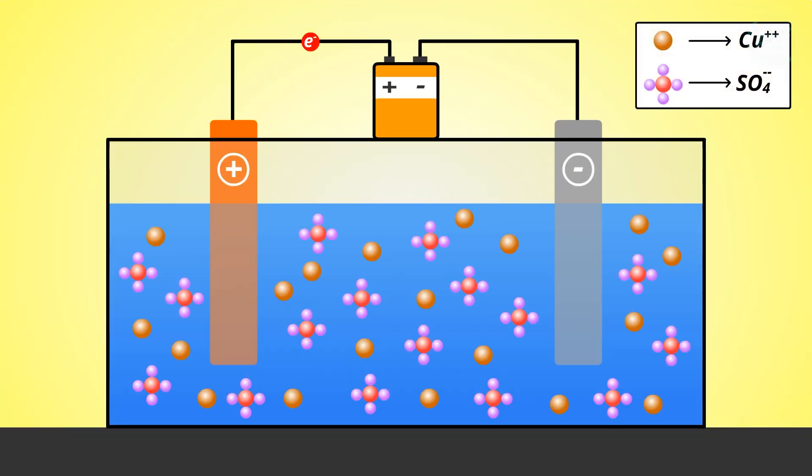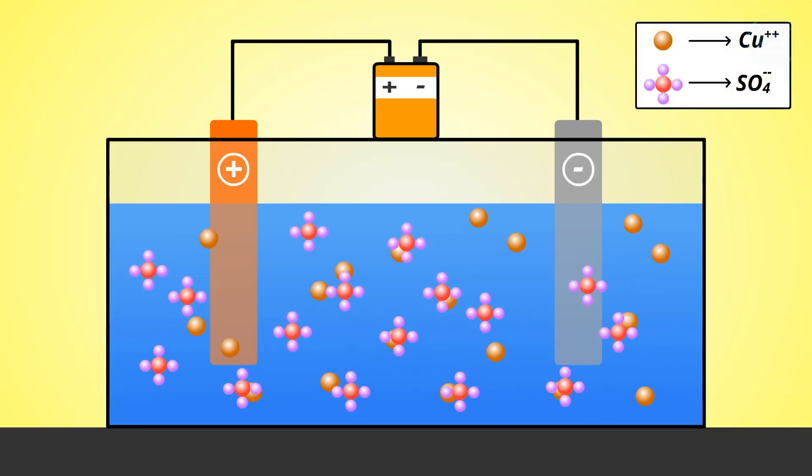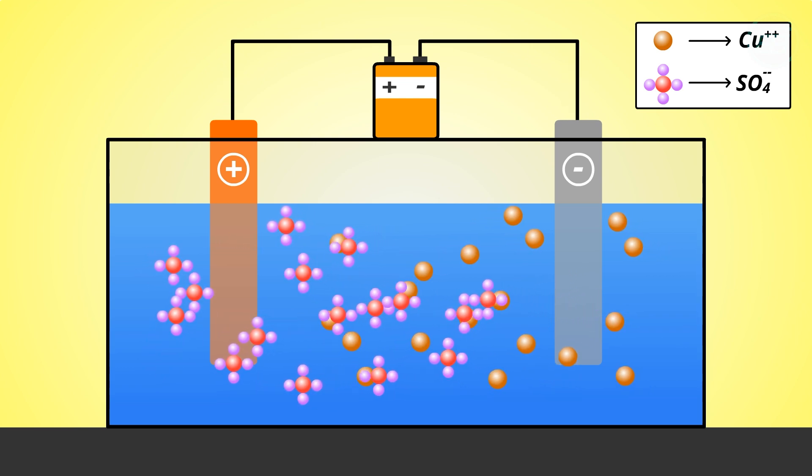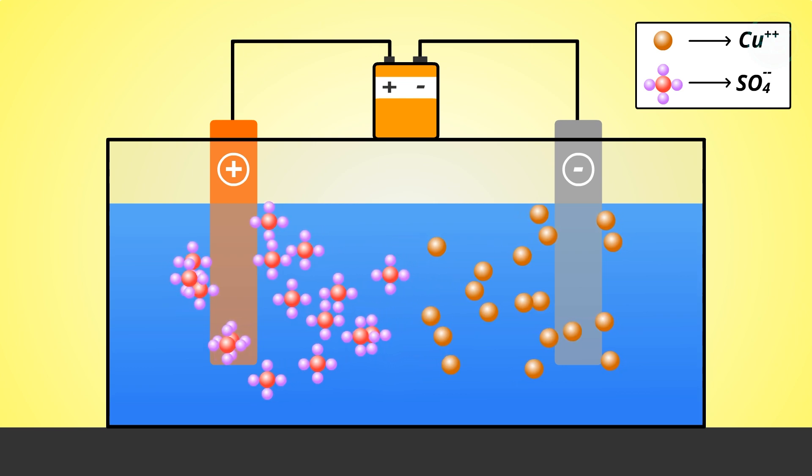When the current is turned on, positively charged cations, copper ions in our example, move to the cathode and negatively charged anions, sulfate ions, move to the anode.